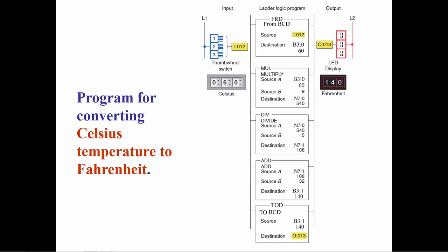The first instruction, FRD, converts the BCD coded value to an integer, and the last instruction converts the integer to the BCD coded representation.